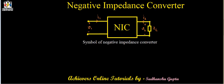This is the symbol of a negative impedance converter. According to its definition, if we connect an impedance ZL at its output port, the impedance seen from its input port is equal to minus ZL. That is, if we connect a resistance R here, the resistance seen from its input terminals is equal to minus R. If we connect an inductor L here, the impedance seen at its input terminals is equal to minus L. And similarly, if we connect a capacitor at the output terminals, the capacitance seen from the input terminals is equal to minus C.